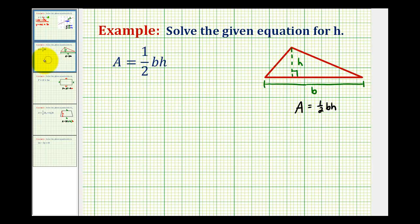Let's take a look at another example. In this example, we want to solve the equation A equals one-half times b times h for the variable h. This happens to be the area formula for a triangle, as we see here on the right.